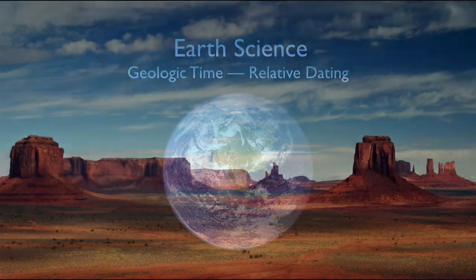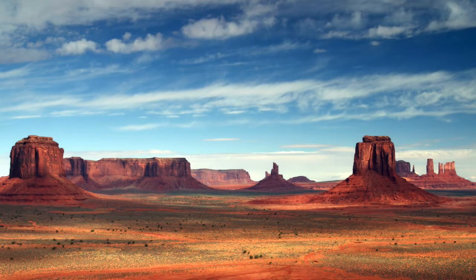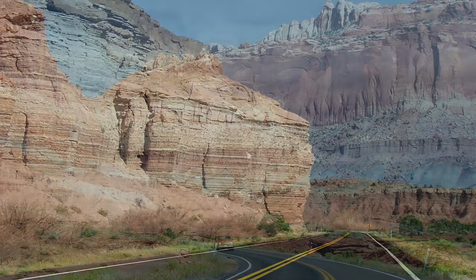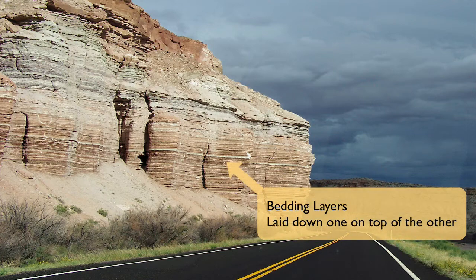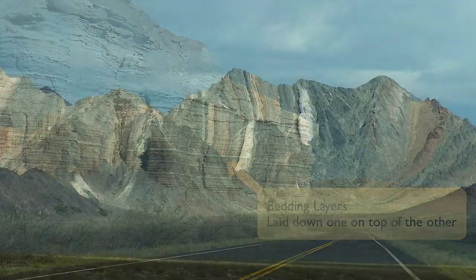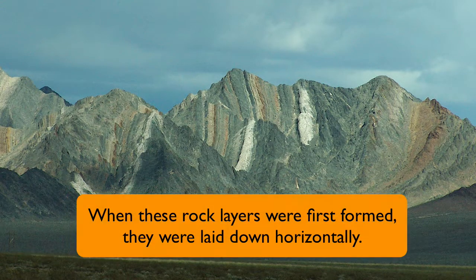Geologists study rock outcrops — the natural exposure of rock layers — or even man-made exposures such as we see in a road cut. In sedimentary rock outcrops, an obvious feature is bedding layers: the way sediments are deposited one on top of the other. Although some rock layers can be folded or tilted, when the sediment was first deposited it was laid down in horizontal beds, layer upon layer.